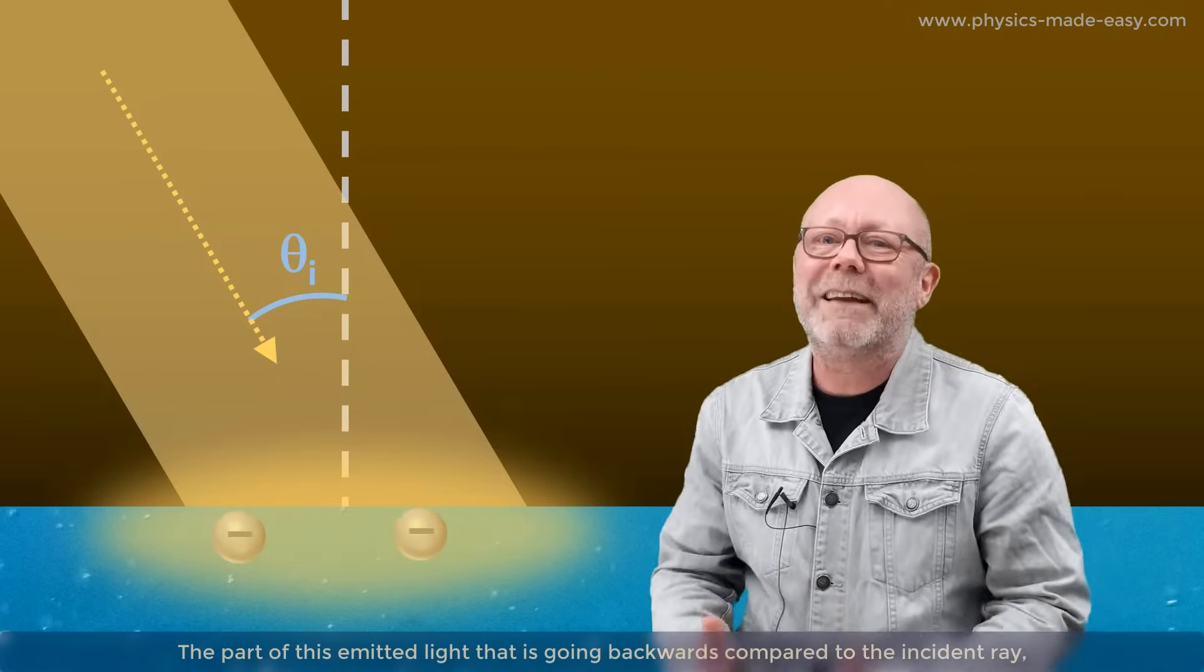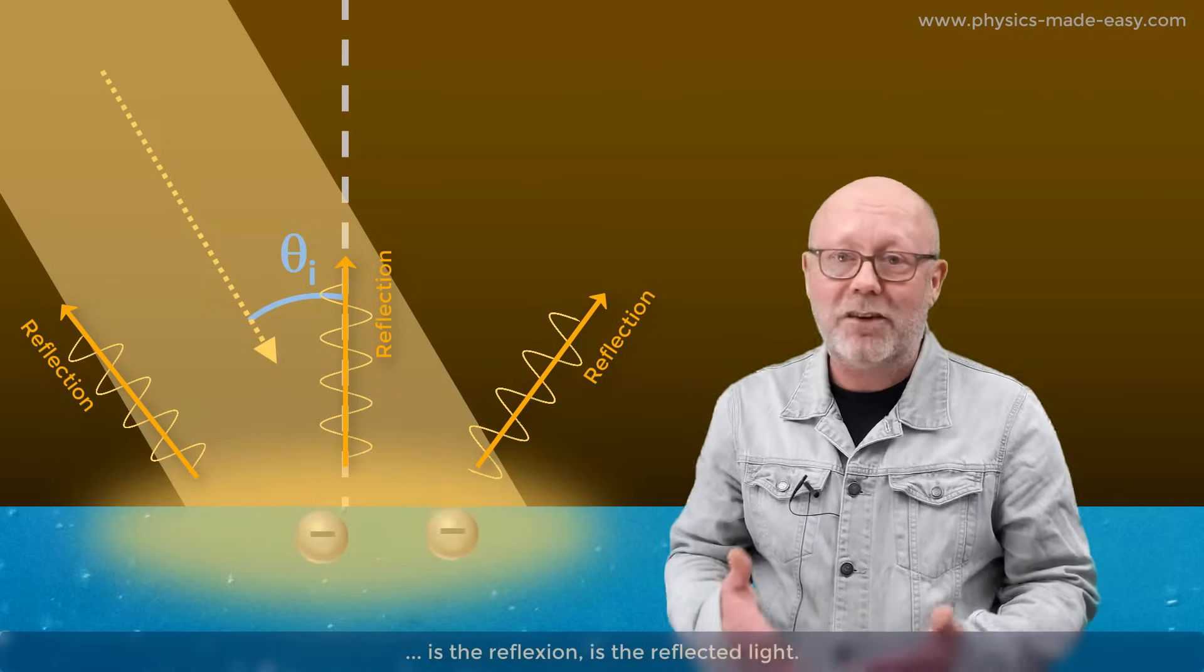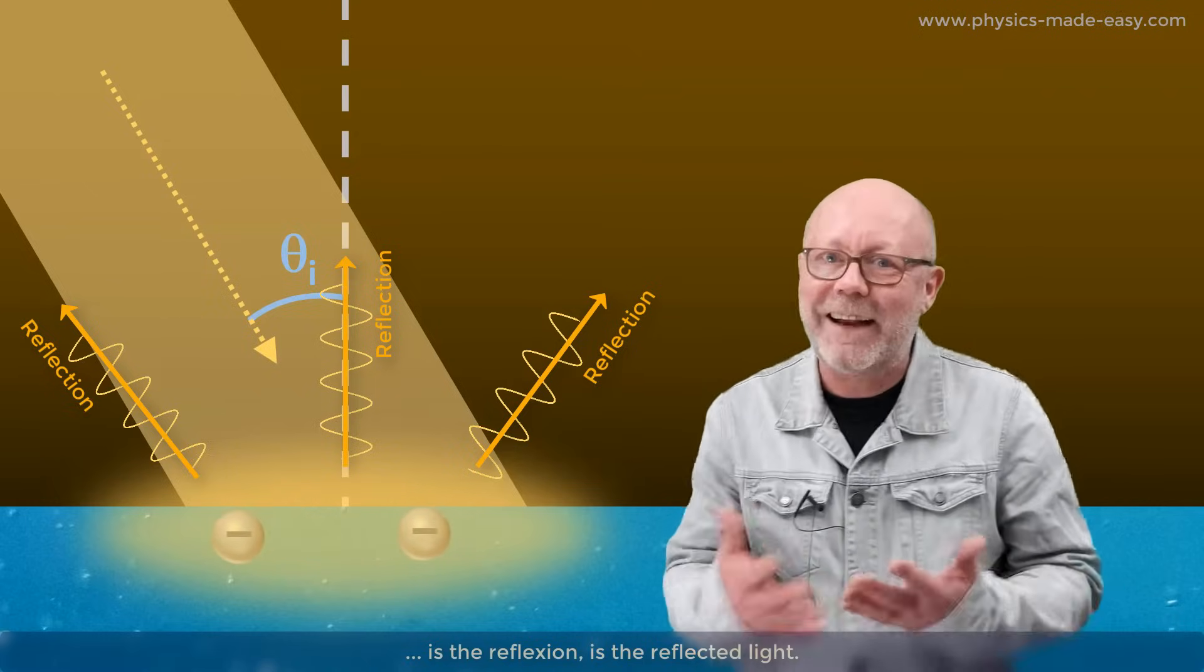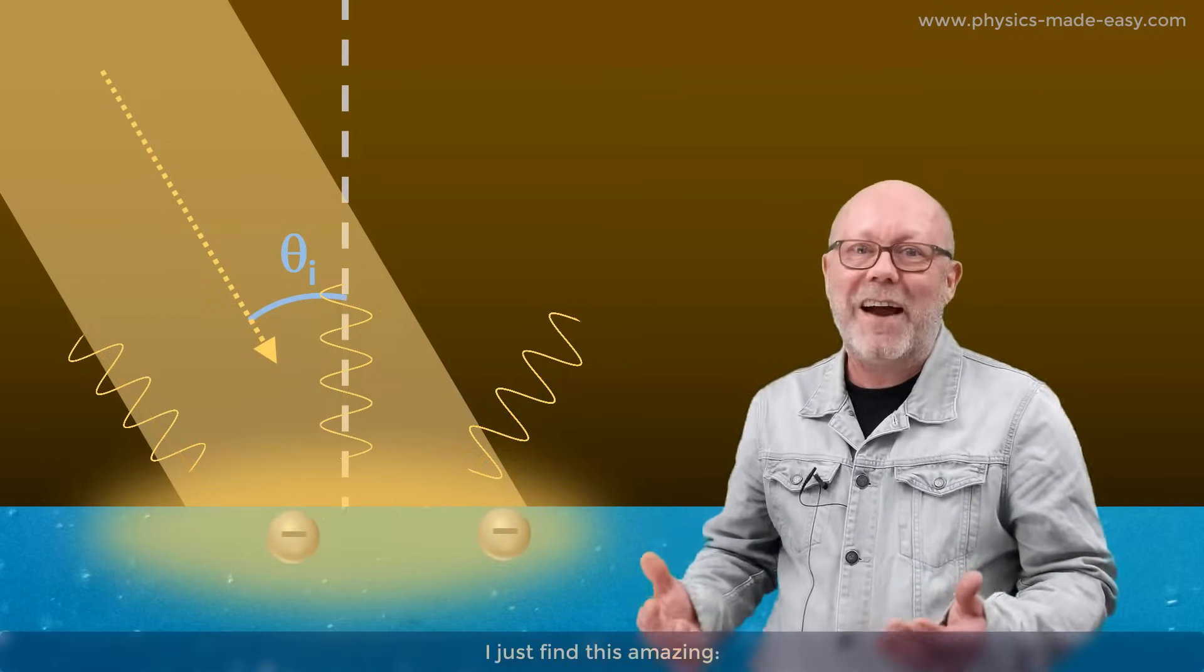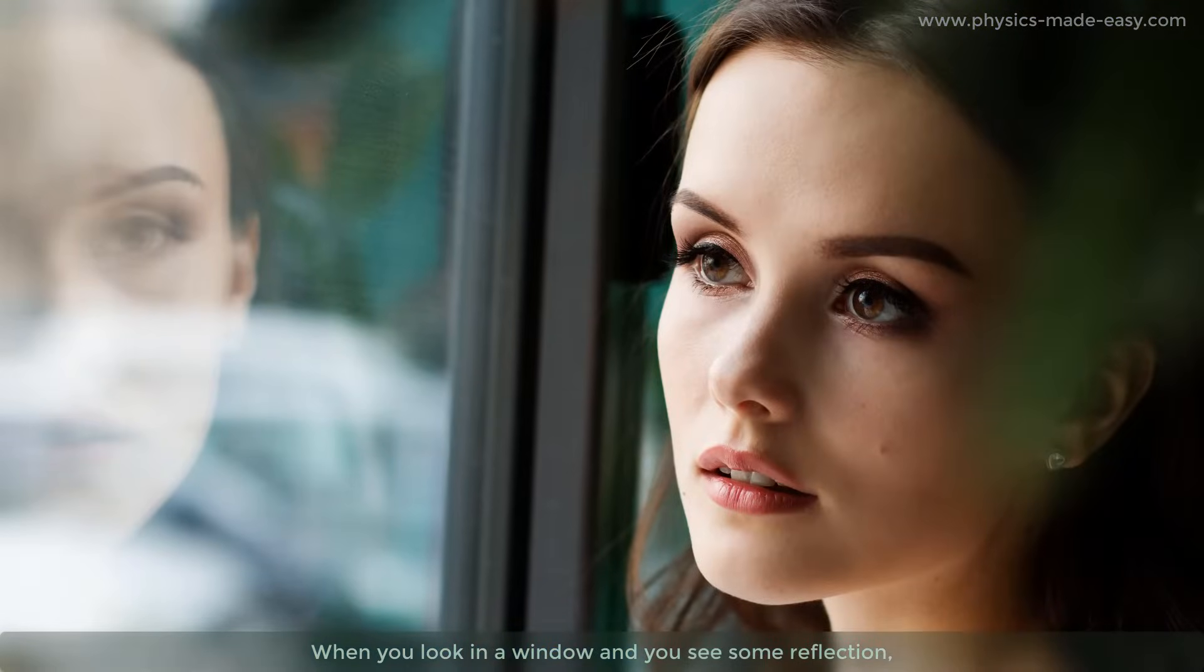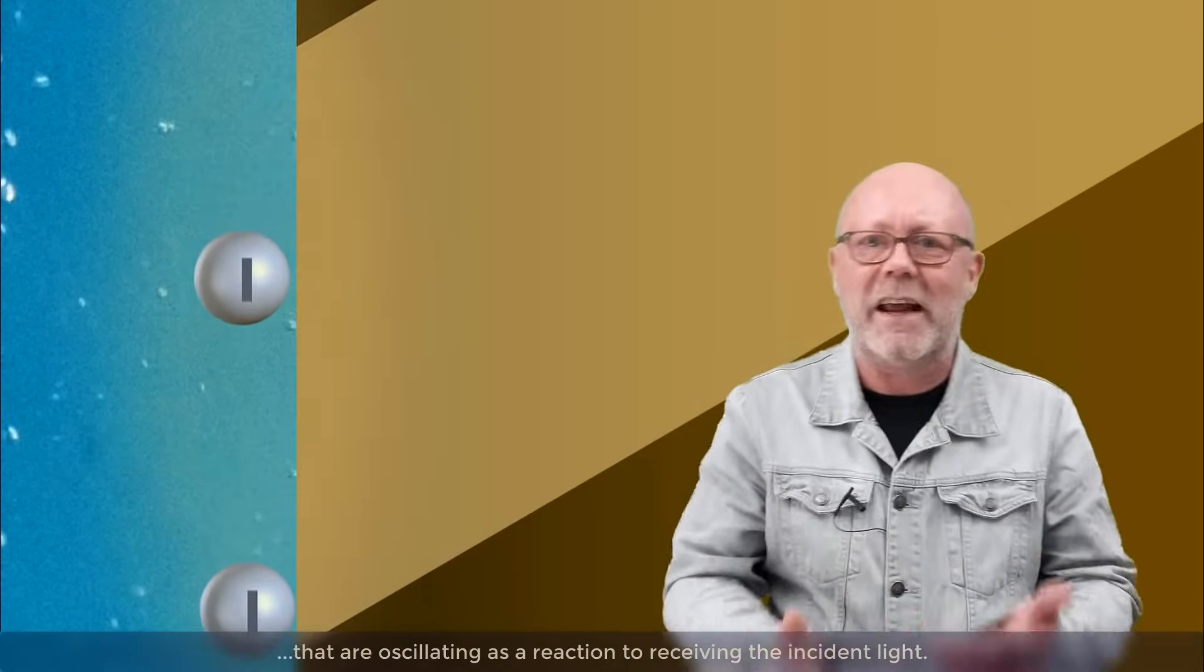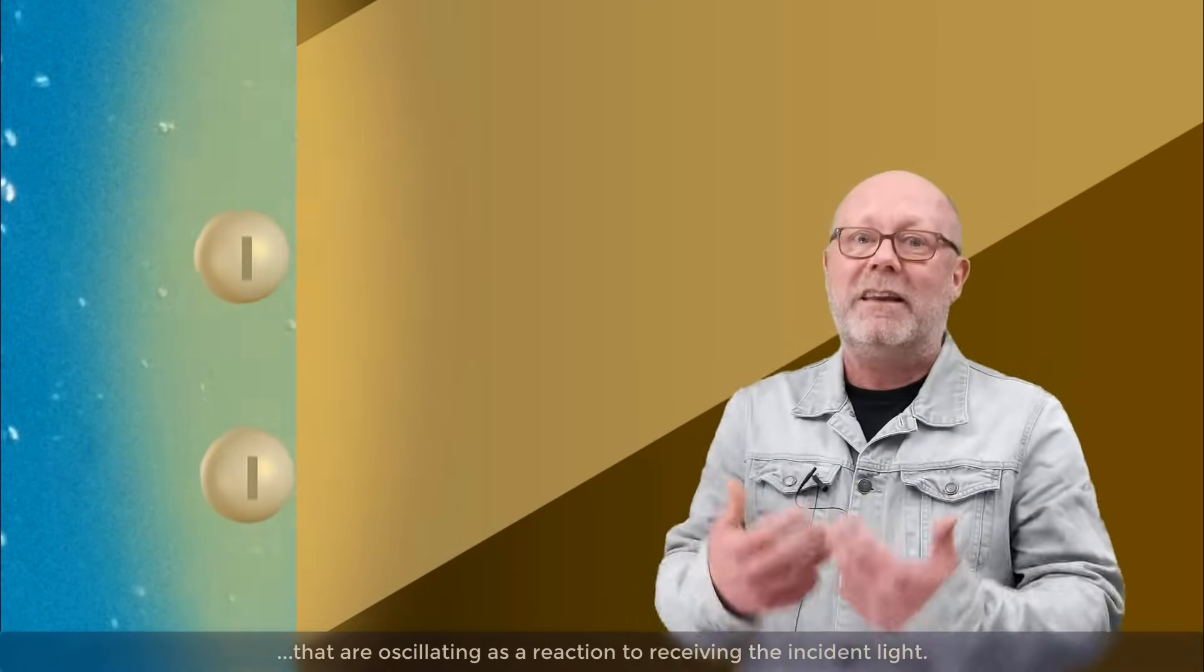The part of this emitted light that is going backwards compared to the incident ray is the reflection. It's the reflected light. I just find this amazing. When you look in a window and you see some reflection, that's what's going on. You are seeing the light emitted by electrons from the glass that started to oscillate as a reaction of receiving the incident light.